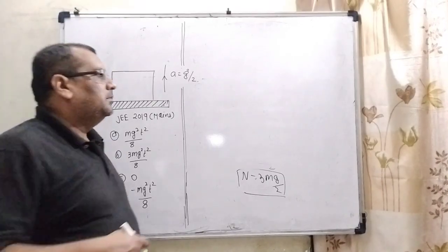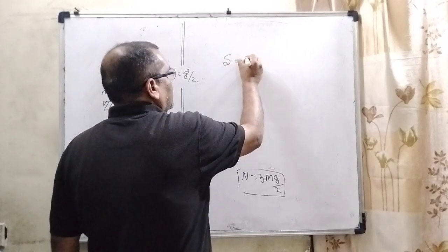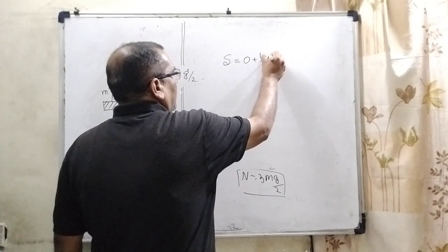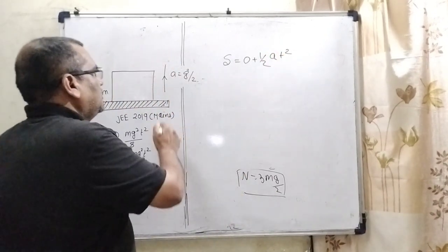Now we have to find out the displacement. s equals initial velocity times t plus half at². Initial velocity is 0, so s equals half at².